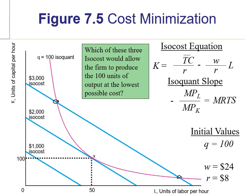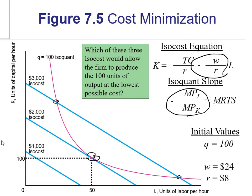Let's go to the image to help understand this concept. You want to find the optimal input combination — the cost minimizing way to spend two thousand dollars and produce a hundred units of output. The optimal bundle occurs at point X, where the slopes are equivalent between our inputs and our output. At point X, the isoquant slope shown in pink is the MRTS, and this is equivalent to the isocost slope shown in blue. The isocost slope is negative W over R.